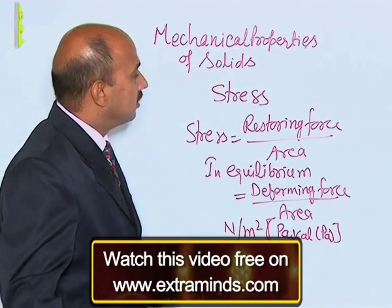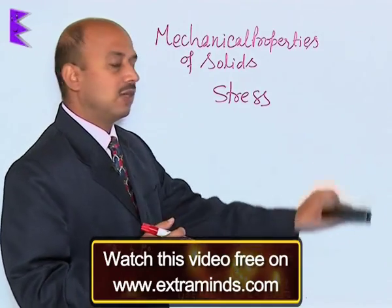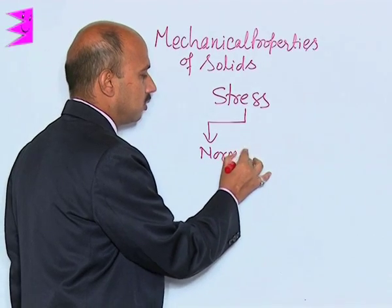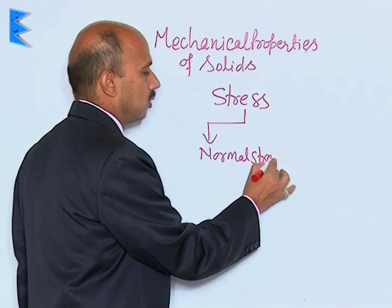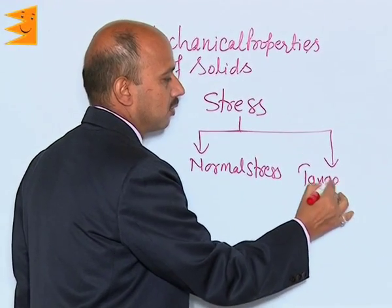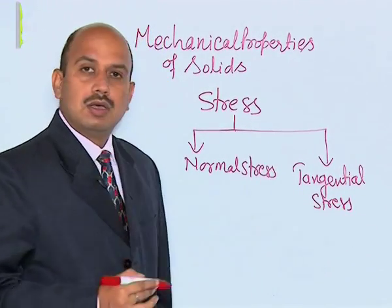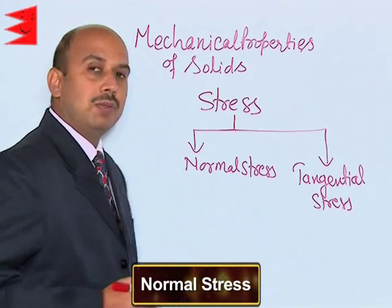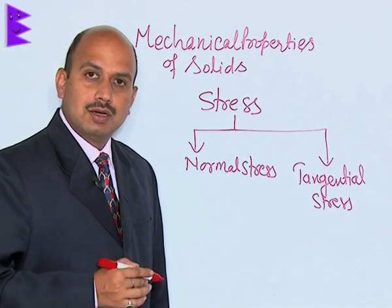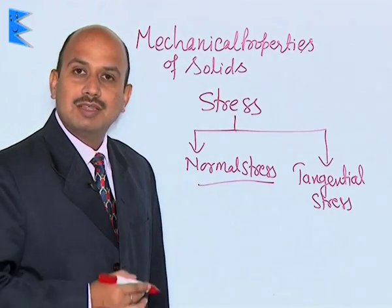Stress can be of two types which we are going to discuss in this chapter. The first one is normal stress and the second one is tangential stress. Normal stress is when you apply a deforming force over an area perpendicular to that area — the force per unit area is known as normal stress.